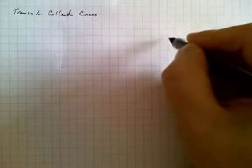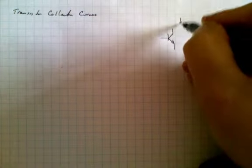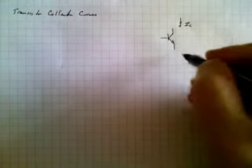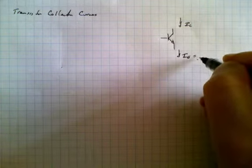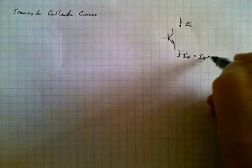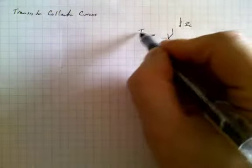We're going to take a few moments and look at the characteristic curves of a transistor. A transistor simply looks like this. It's basic characteristics. We have a collector current, we have an emitter current which is equal to the base current plus IC, and in here we have a base current IB.